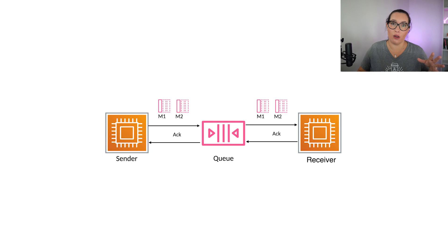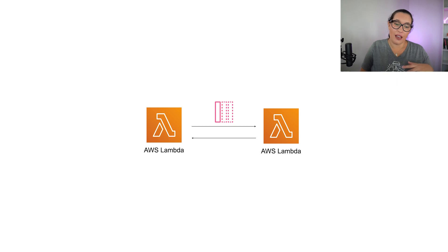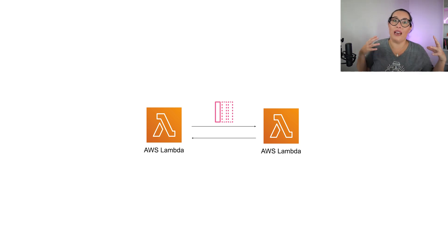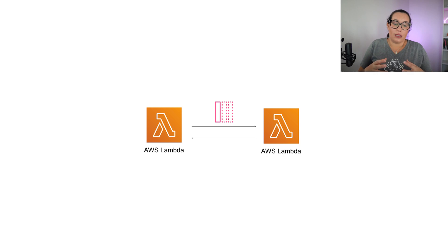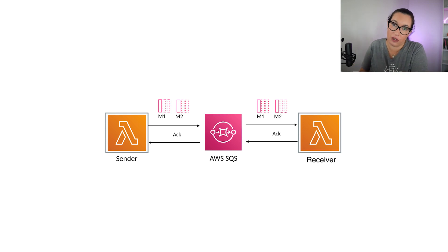One typical use case people come to me with is wanting two Lambda functions to talk to each other. I say that's not a good idea because you're coupling them together. If one Lambda talks to the other synchronously, the first Lambda is waiting until the second Lambda finishes, and you can have a mess. If replicated 20 times, everything will time out — there can be chain failures. So instead, we apply the queue pattern: one Lambda sends a message to a queue, and the other Lambda gets triggered when there is a message in that queue.